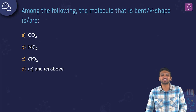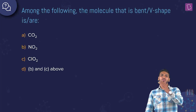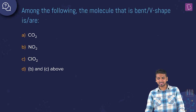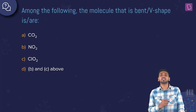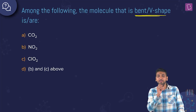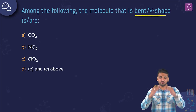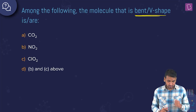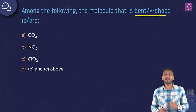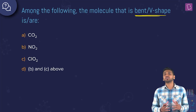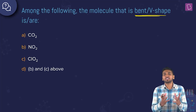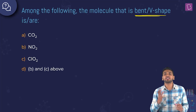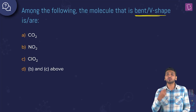Here we have a question on shapes of molecules. Among the following, which molecule is bent or V-shaped? The options are CO₂, NO₂, ClO₂, and D: both B and C. We need to analyze the geometry of each molecule.